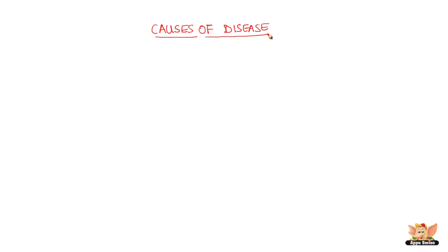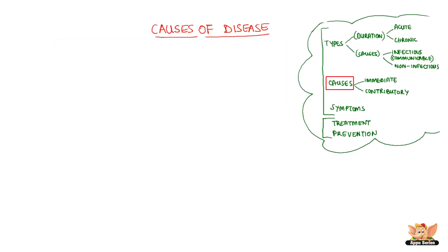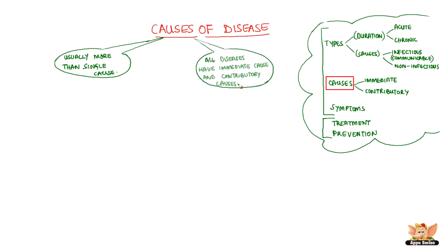Causes of Diseases. It is important to know what caused the disease — how did it start, and what is the source? Any disease usually has more than a single cause. All diseases have immediate causes and contributory causes.